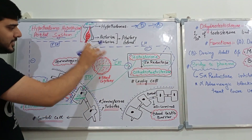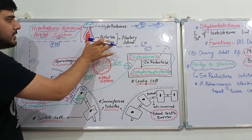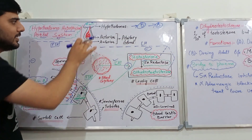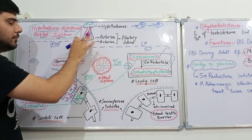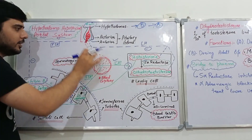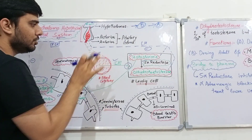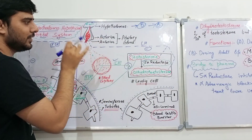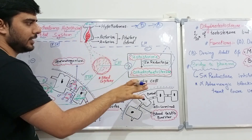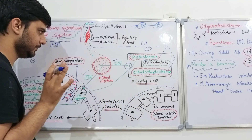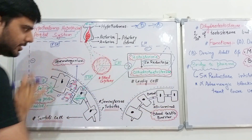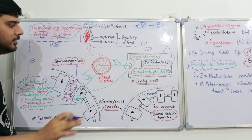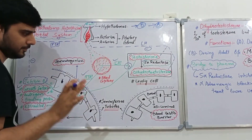The pituitary gland is an endocrine gland, so it will release its secretions into the blood, and that blood will carry these hormones to the testes. These gonadotropins will act on the gonads, and in males the gonads are the testes.